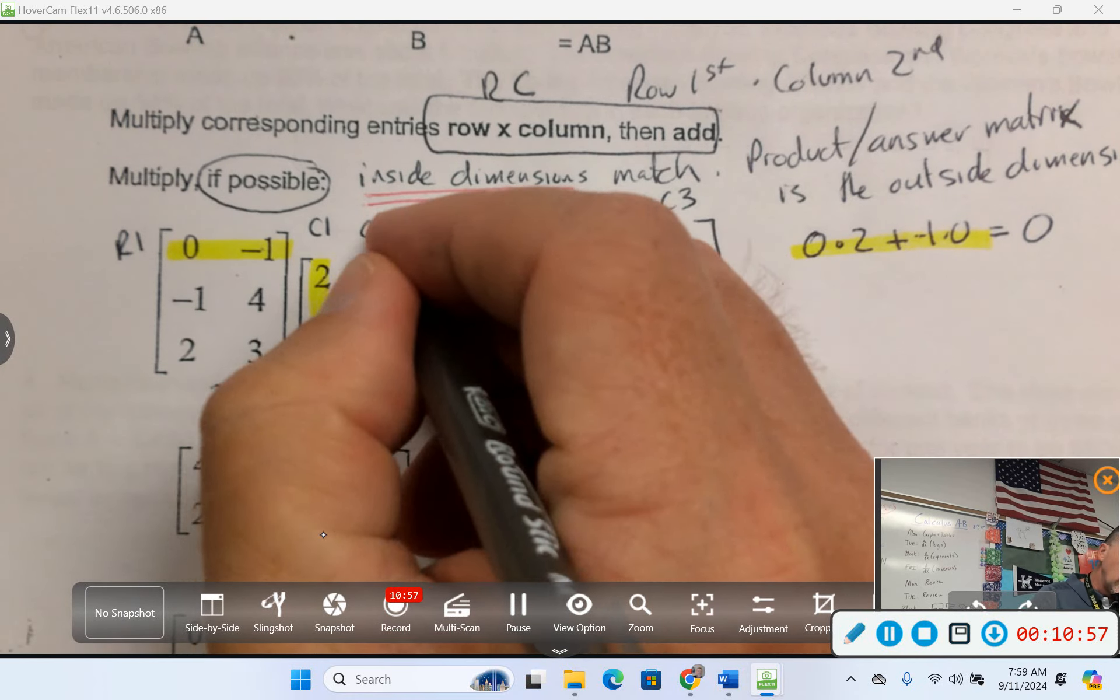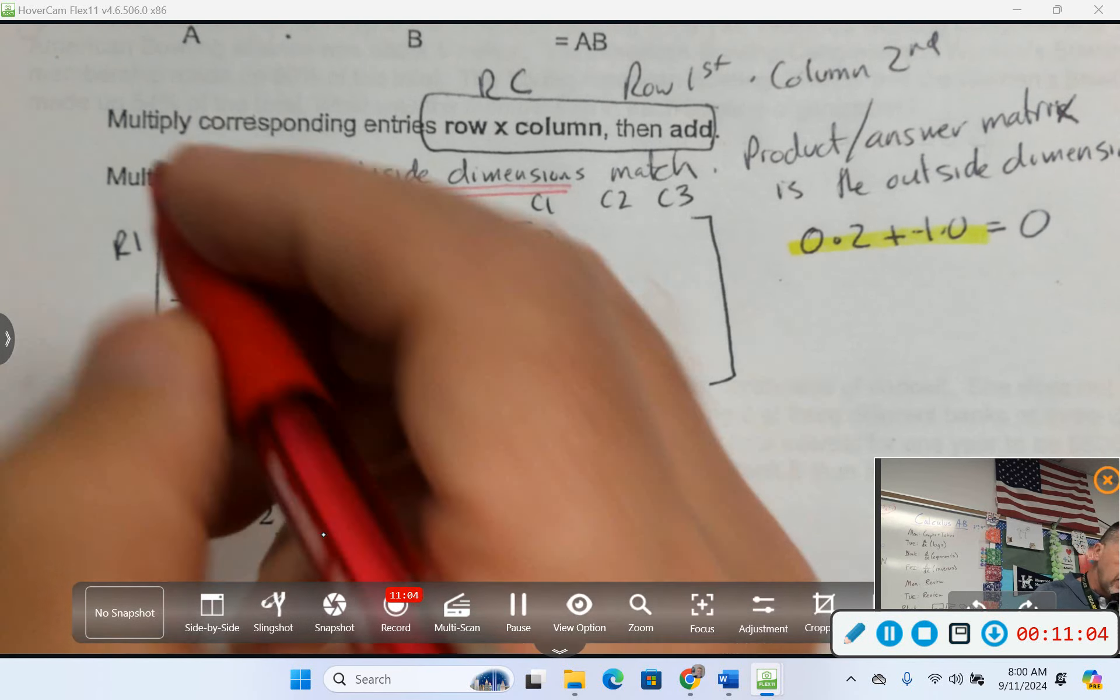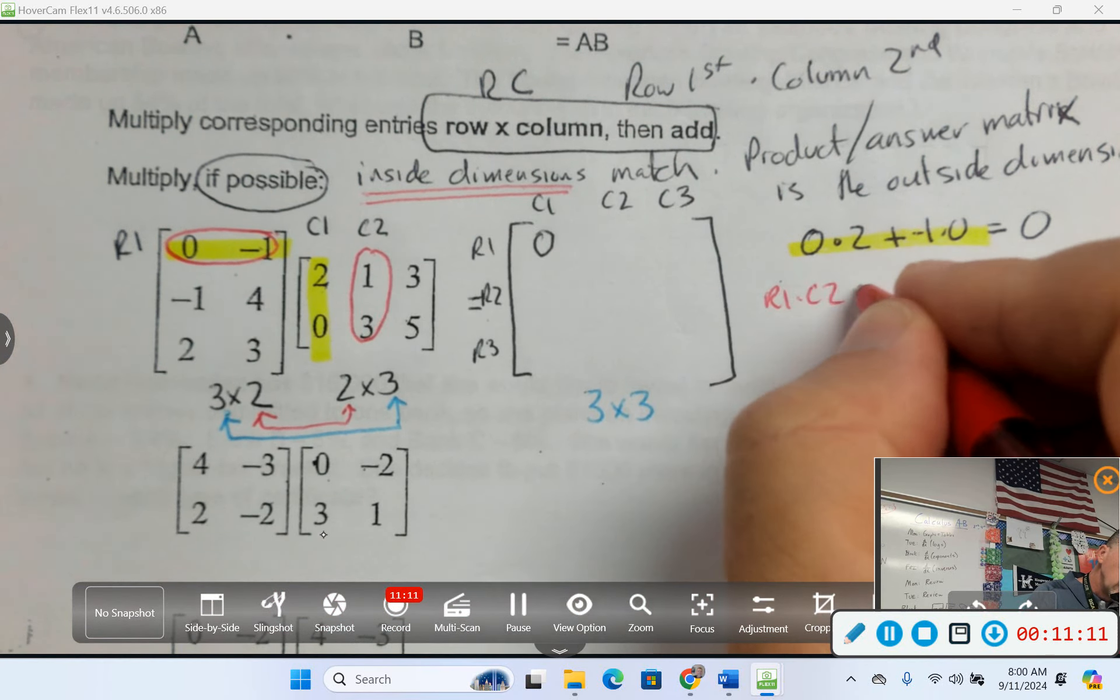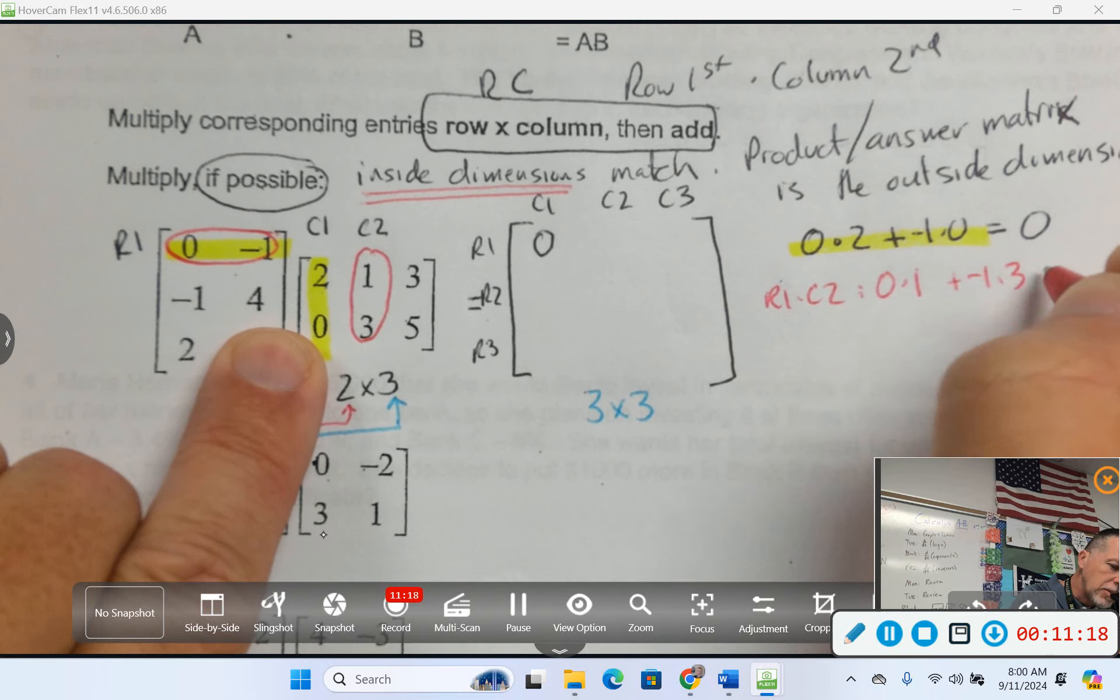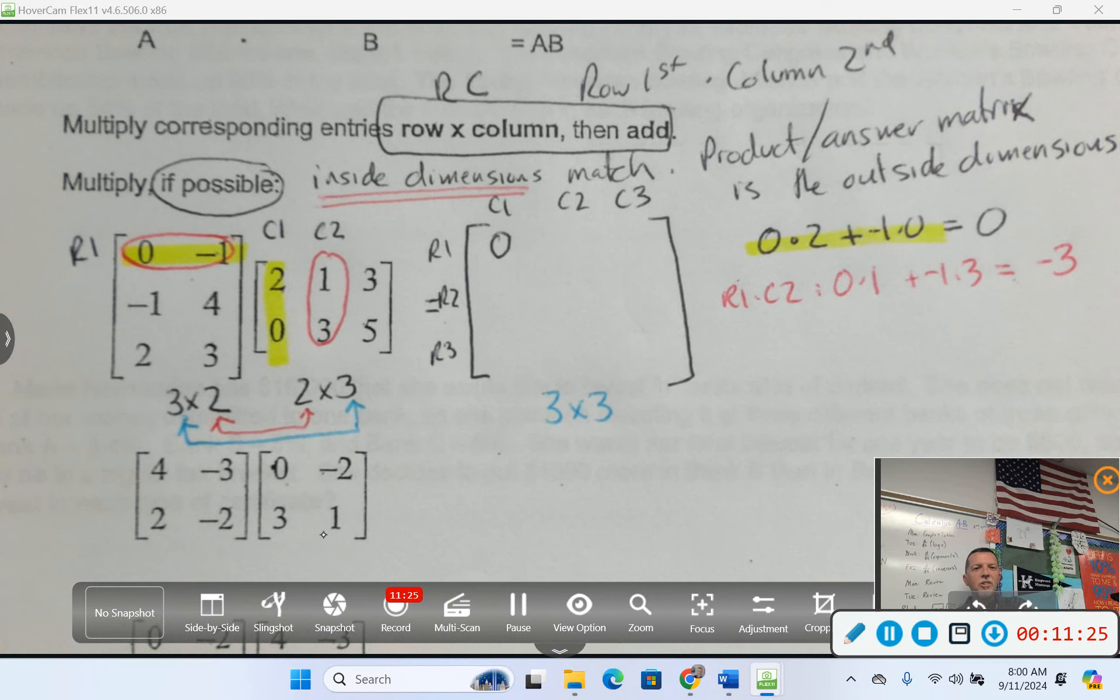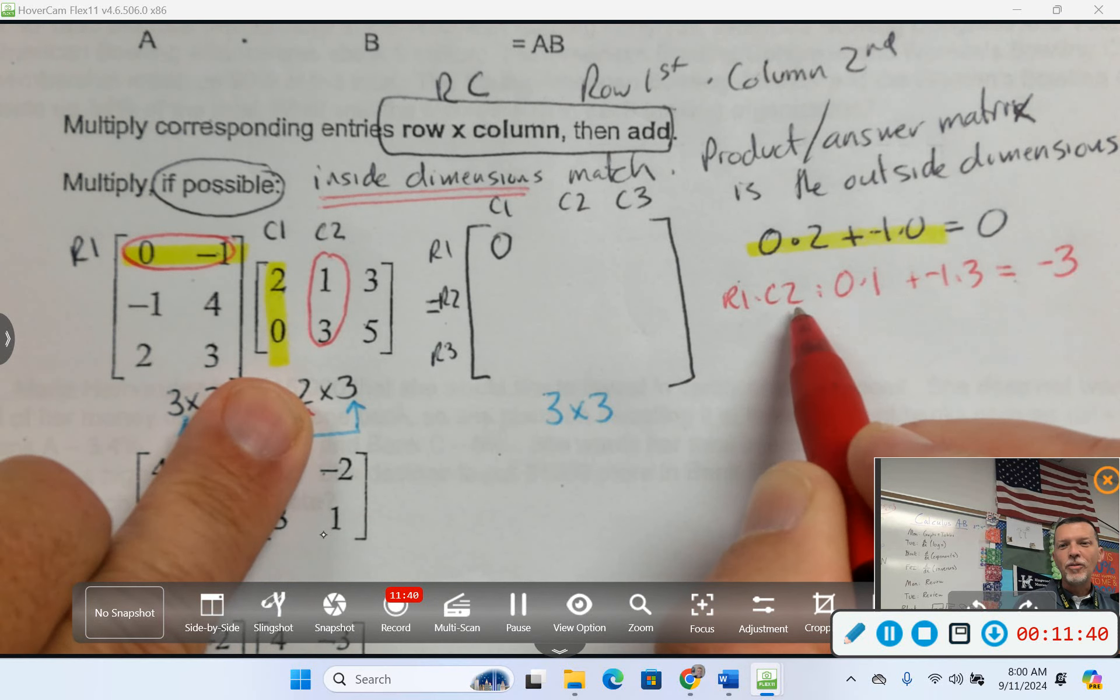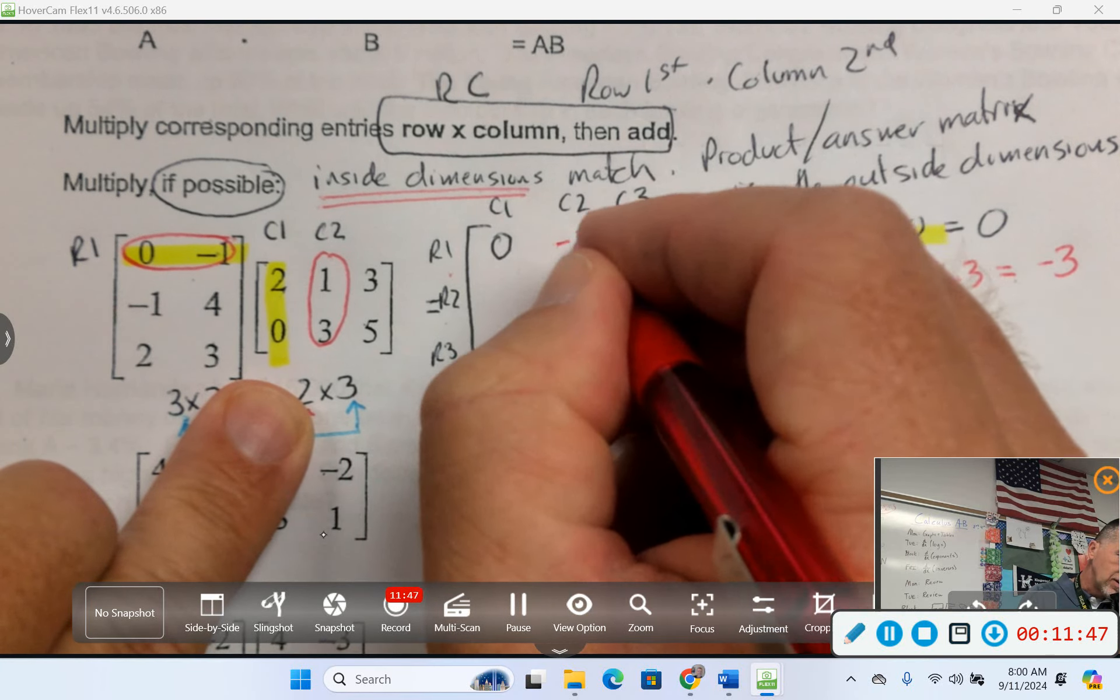How am I supposed to multiply a row by a column? You're going to multiply the pieces and add the things that you get. So you're going to do 0 times 2 plus negative 1 times 0. We multiplied row 1 times column 1, so we should put our answer in row 1, column 1. Now we can do row 1, column 2. 0 times 1 plus negative 1 times 3 would be negative 3. And where should I put that answer if I multiplied row 1 times column 2? Row 1, column 2.